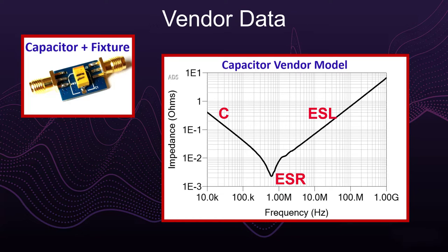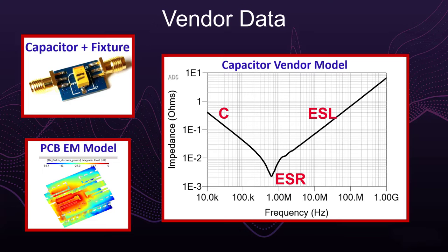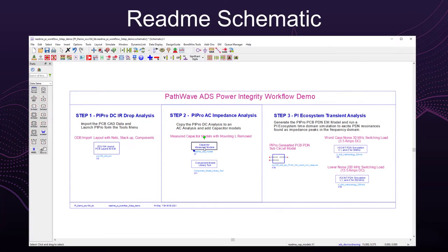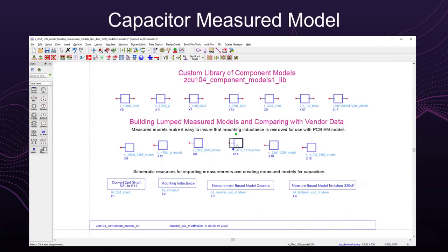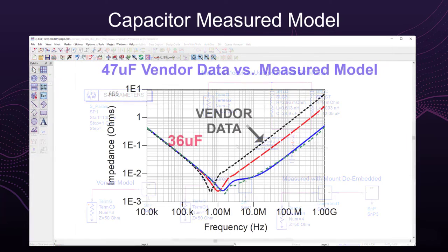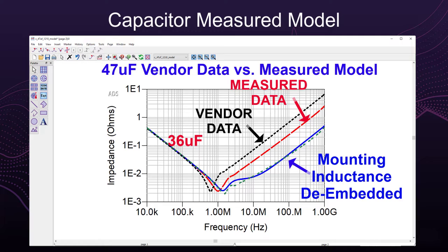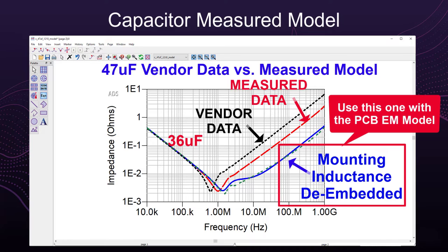The PCB EM model already includes the mounting inductance for the PCB footprint, and it would not be good to add a capacitor model that also includes mounting inductance from some unknown fixture. ADS makes it easy to create a capacitor measured model with and without the mounting inductance. Here is a typical plot of a ceramic capacitor showing the vendor data compared to measured data and then compared to measured data with the mounting inductance de-embedded. The measured capacitor data with the mounting inductance de-embedded is the right model to use with the PI Pro PCB EM model.